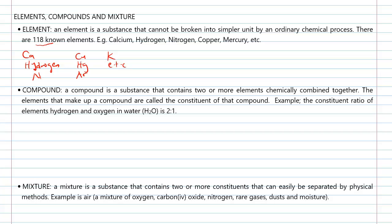The 118 known elements are arranged in a table according to atomic numbers called the periodic table. When one or more of these elements combine chemically to form a compound, such product is called compound. Thus, a compound is a substance that contains two or more elements chemically combined together.